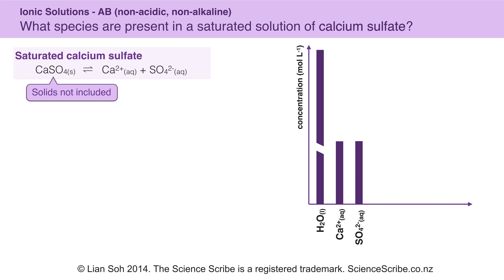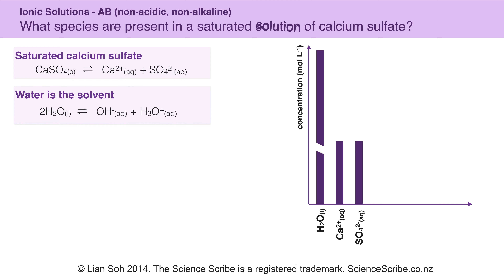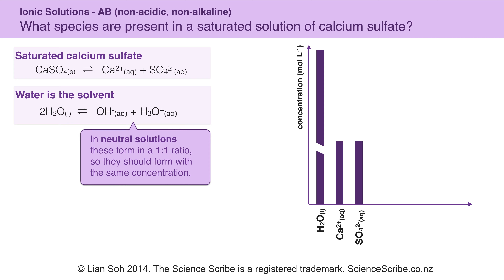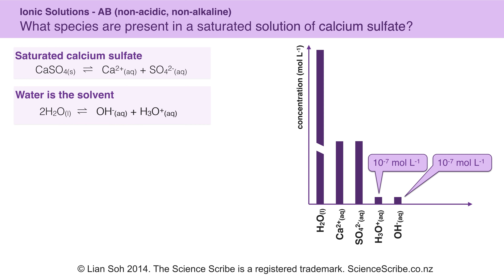Note that we don't include solids in our speciation graph. Now since these are aqueous solutions, there will always be hydroxide and hydronium ions present. What's special in this case is that it's neutral, so my concentration of hydroxide to hydronium should be equal as well. I've deliberately shown them as two smaller bars because they each have very small concentrations of 10 to the negative 7 moles per litre.